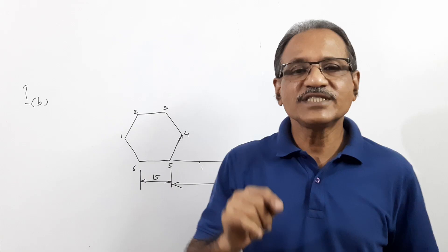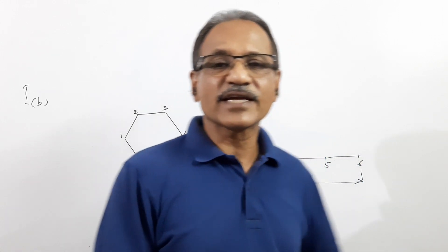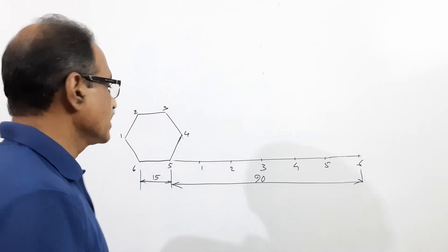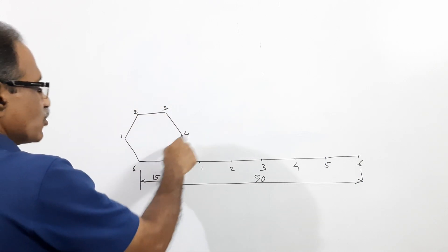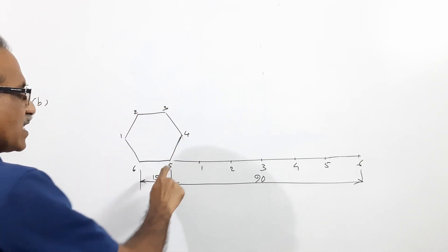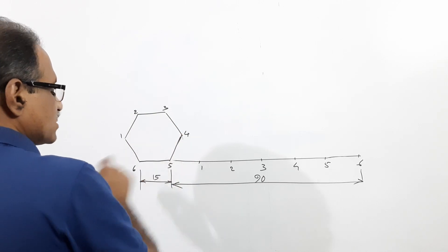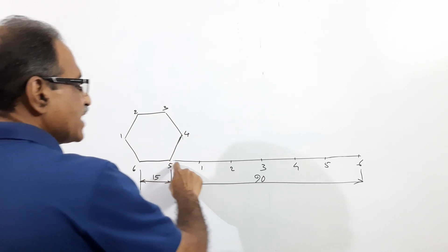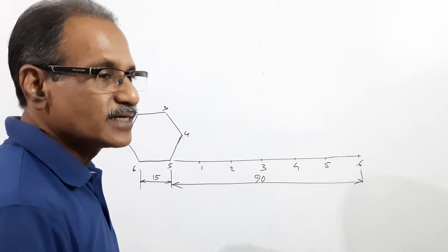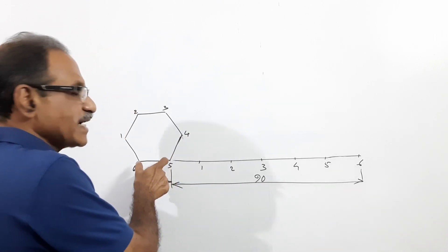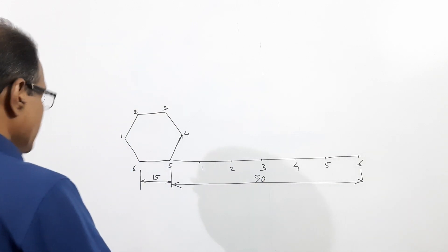Question 1b is to draw the involute of a regular hexagon with 15 mm side. Draw a hexagon with 15 mm side and mark vertices 1, 2, 3, 4, 5, 6. Draw a horizontal line whose length equals the perimeter of the hexagon: 15 mm × 6 = 90 mm. Draw a line 90 mm long.